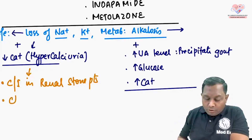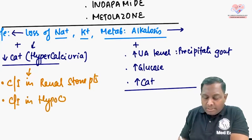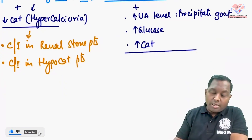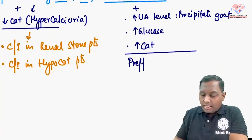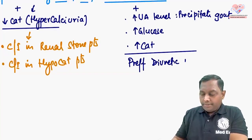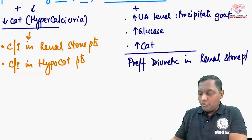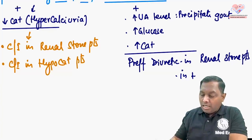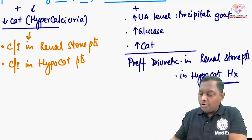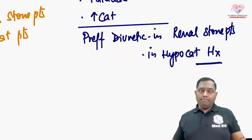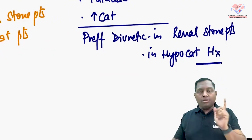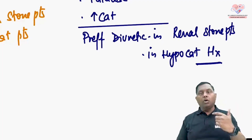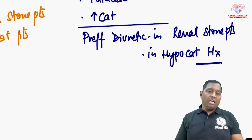We should not give loop diuretics to hypocalcemia patients because hypocalcemia itself is an emergency, and giving a diuretic that further worsens it is dangerous. On the other hand, thiazide diuretics are the preferred diuretic in renal stone patients and are also preferred in patients with a history of hypocalcemia.